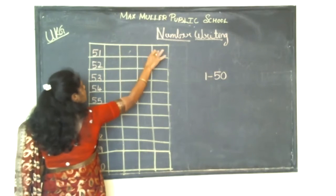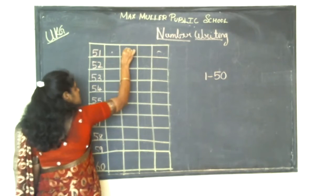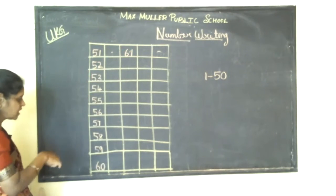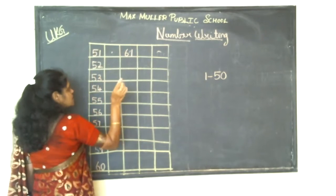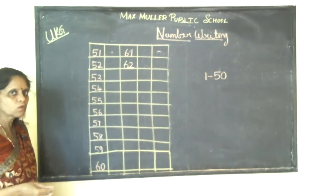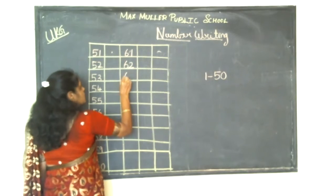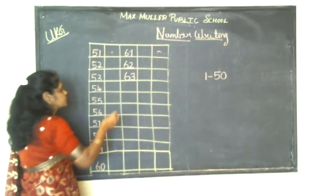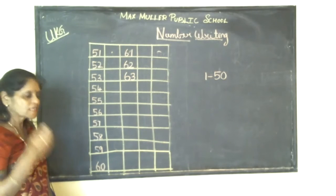Now, you have to keep a dot over here. Keep a dot here. Don't write in this box. Next, you have to write 6, 1. You carry this over. You write after 60. First on top, you must write 6, then copy the same number. 6, 1 — 61. 6, 2 — 62. 6, 3 — 63. Say and write, children — 6, 1, 61; 6, 2, 62; 6, 3, 63.